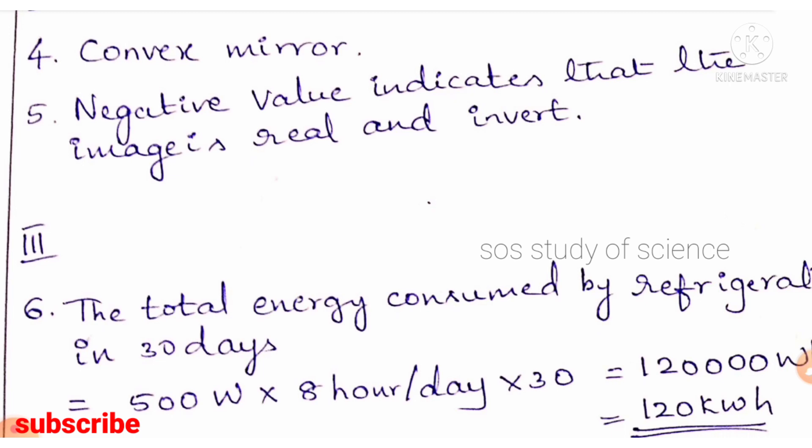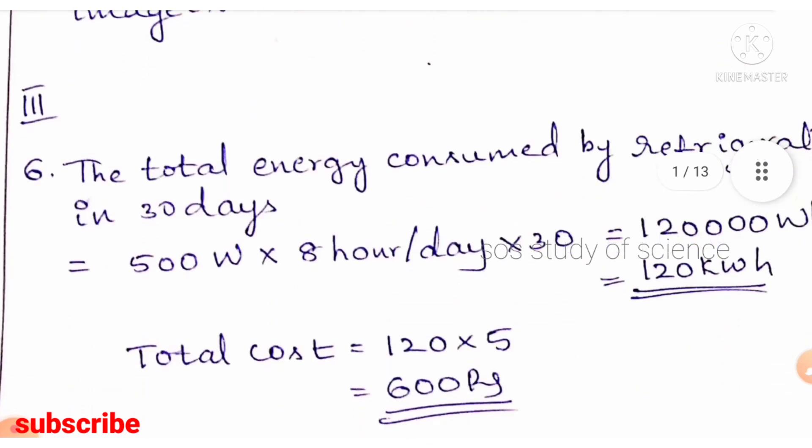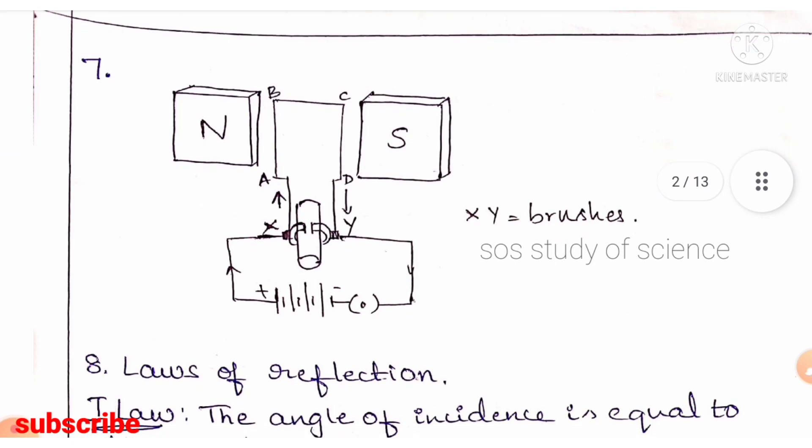Sixth question: an electric refrigerator rated 500 watts operates 8 hours a day — what is the cost to operate it for 30 days at ₹5 per kilowatt-hour? Multiply: 500 W × 8 hours × 30 days = 1,20,000 watt-hours = 120 kilowatt-hours. At ₹5 per kWh, the cost is 120 × 5 = ₹600.